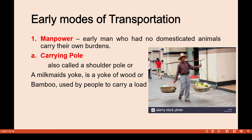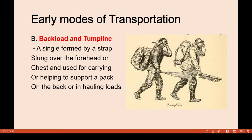Early modes of transportation: first, manpower. Early man, who had no domesticated animals, carried his own burden. An example is the carrying pole — also called a shoulder pole or milkmaid's yoke — a yoke of wood or bamboo used by people to carry loads. Another form is the backpack and tumpline: a strap slung over the forehead or chest used for carrying or supporting a pack on the back or hauling loads.